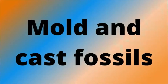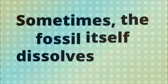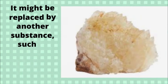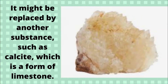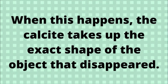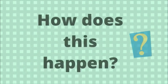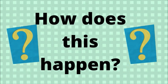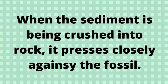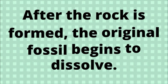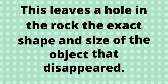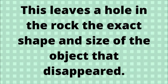Mold and cast fossils. Sometimes the fossil itself dissolves away. It might be replaced by another substance, such as calcite, which is a form of limestone. When this happens, the calcite takes up the exact shape of the object that disappeared. When the sediment is being crushed into rock, it presses closely against the fossil. After the rock has formed, the original fossil begins to dissolve. This leaves a hole in the rock the exact shape and size of the object that disappeared.